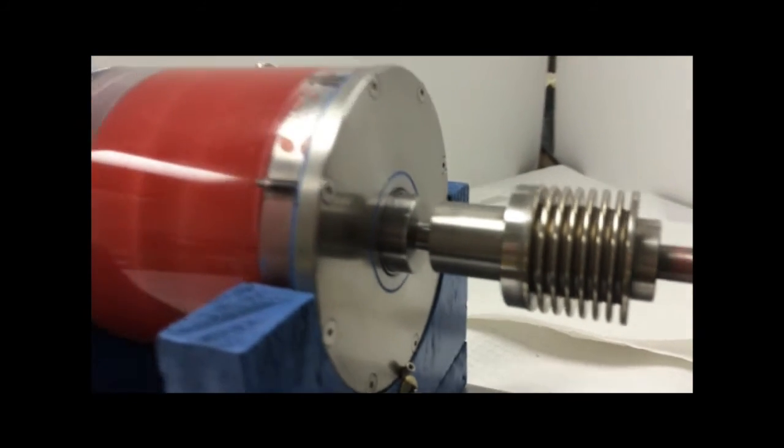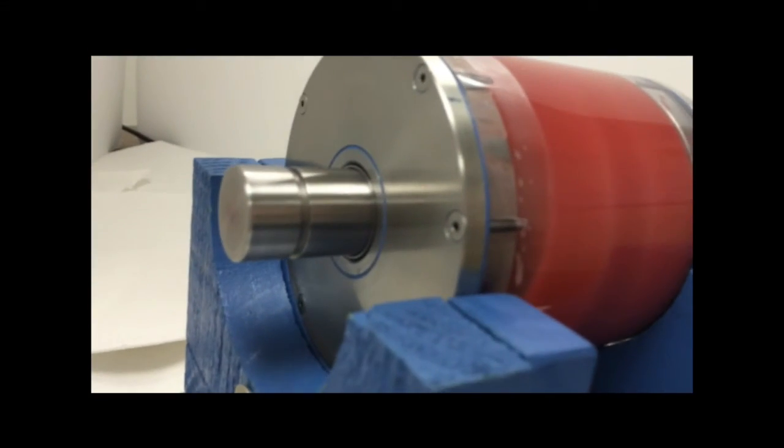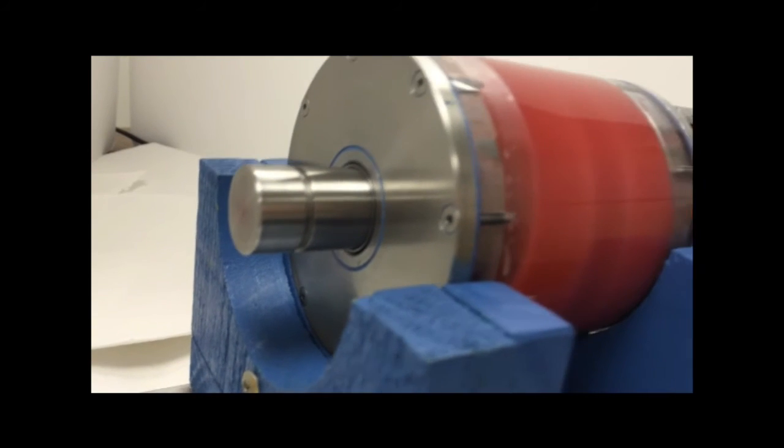The shaft speed is now reduced to 100 RPM. Even at this slow speed, there is no leakage from the seals.